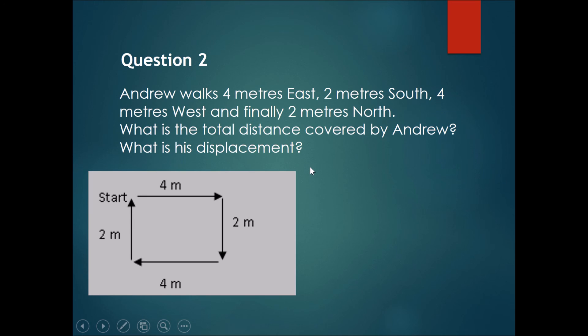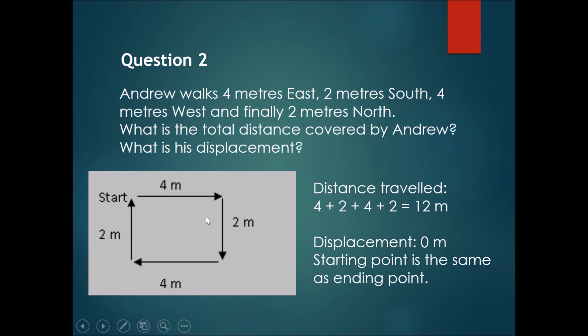Okay, so now let's give you the answer. The distance traveled is quite simply 4 plus 2 plus 4 plus 2, which gives you a total of 12 meters. However, you can see that where he started is the same place as where he ended.